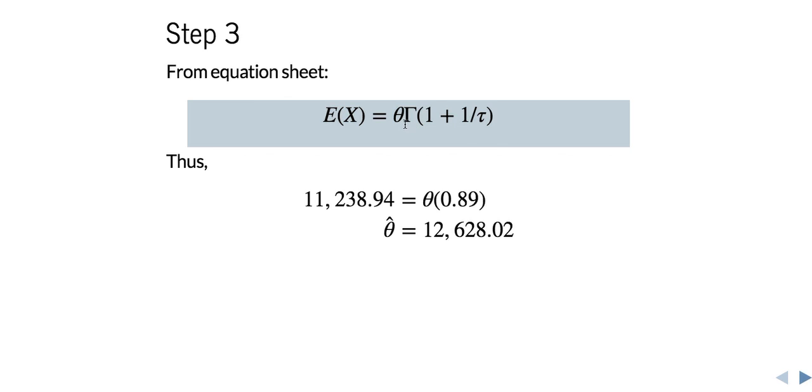So this is where we end up having a gamma of 1 plus 1 over τ. If τ is 2, then we have a gamma function of 1.5 here. And we get that 0.89 from the first slide. So now solving for θ, we have θ hat equals to about $12,628. That is our estimate for θ.